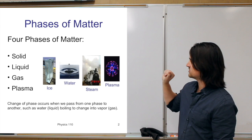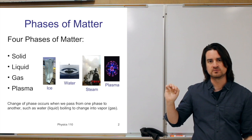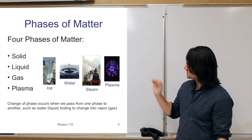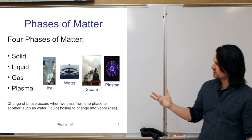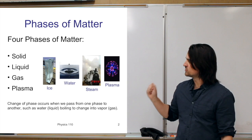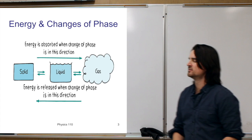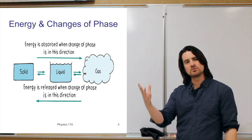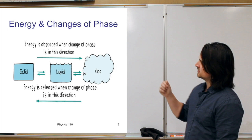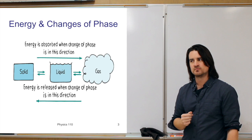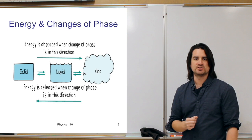We have four phases. Ice, water, and steam are three phases of H2O — solid, liquid, and gas. Plasma is our fourth phase, but we won't focus on that much. A phase change occurs when you change from one phase or state of matter to another. To change the phase of a material, you need to add or remove energy from that system — remember, heat is just a form of energy.